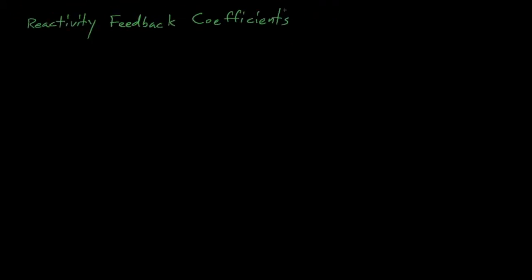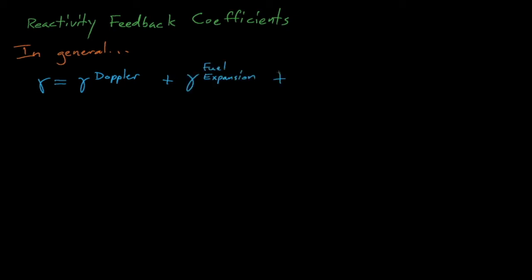Let's begin by discussing reactivity feedback. Feedback describes how a system's output affects its input. An example is how going faster on a bicycle generates more wind resistance, making it more difficult to go even faster. Another example is how nuclear reactors become less reactive as they heat up. Feedback effects in reactors are generally caused by Doppler broadening, which increases the fuel's rate of parasitic neutron capture, or because the fuel expands as it heats up, increasing neutron leakage, or because increased heat causes the moderator to boil away or decrease in density.